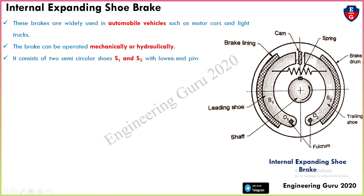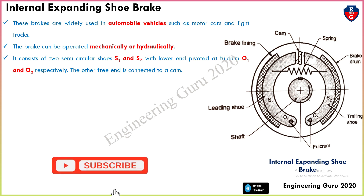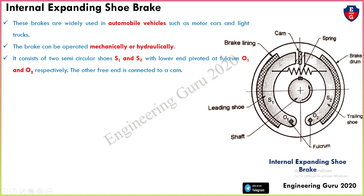The brake consists of two semi-circular shoes S1 and S2. In a previous video we already covered single shoe brake and double shoe brake. Here S1 and S2 are the two shoes, with the lower end pivoted at fulcrum O1 and O2 respectively. Here this is the O1 point and this is the O2 point.